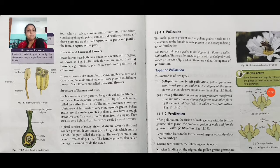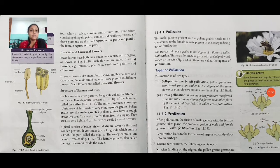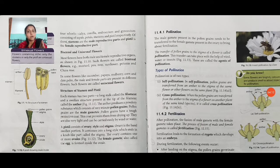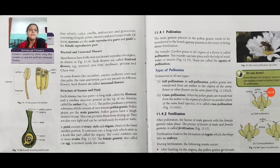Types of pollination: there are two types — self-pollination and cross-pollination. In self-pollination, pollen grains are transferred from the anther to the stigma of the same flower or another flower on the same plant. In cross-pollination, the pollen grains are transferred from the anther to the stigma of a flower on another plant.